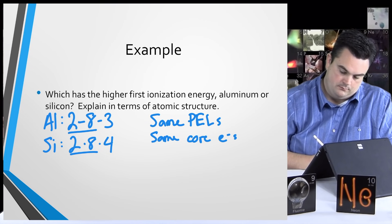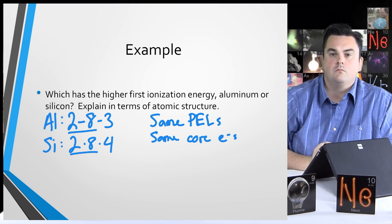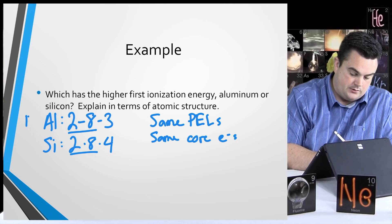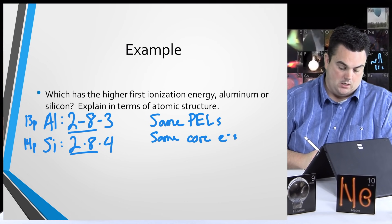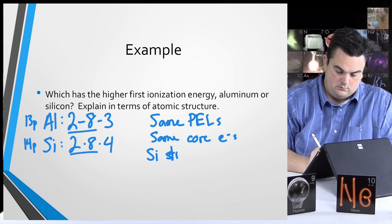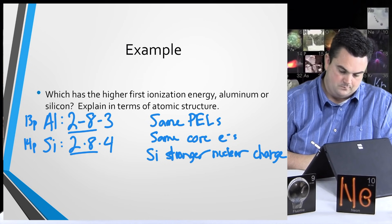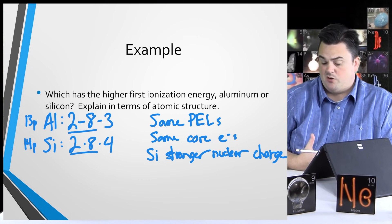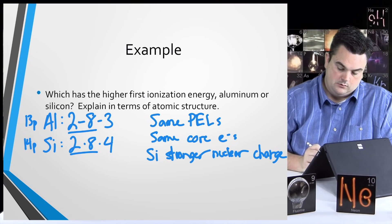We really want to focus on the atomic number or nuclear charge — thinking of attractions being pulled toward the center. Aluminum has an atomic number of 13, so it has 13 protons. Silicon has 14 protons, so silicon has a stronger nuclear charge. Since the PELs and shielding are the same, only the nuclear charge differs. Silicon has a stronger pull for those electrons — stronger attractions.